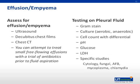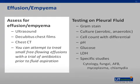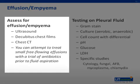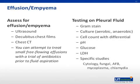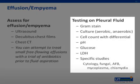When we think about effusions and empyemas, it is important to assess the severity of the complication. Ultrasound, decubitus chest films, and chest CT can assist you in characterizing whether you have an effusion or an empyema. If you do collect fluid in your patient's care, it is important to obtain a gram stain, culture, cell count and differential, pH, glucose, and LDH.